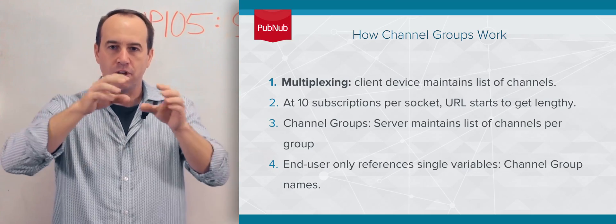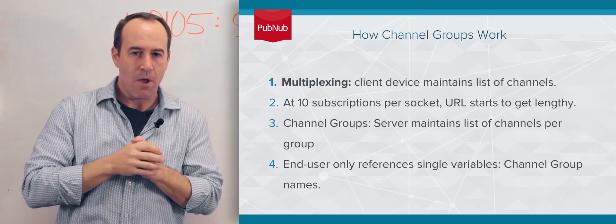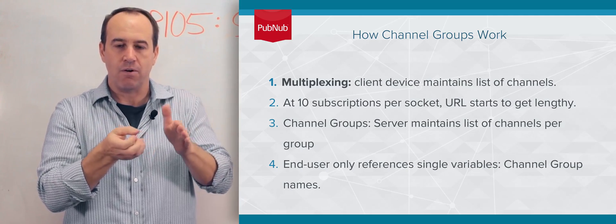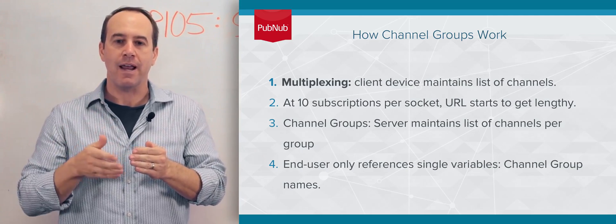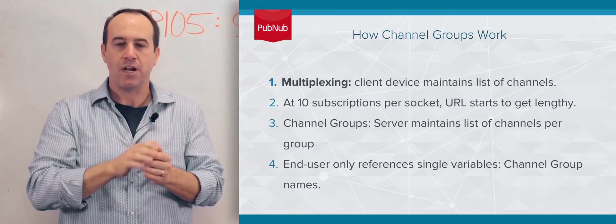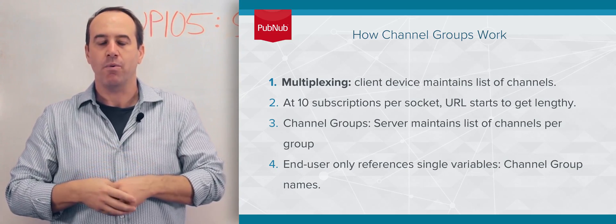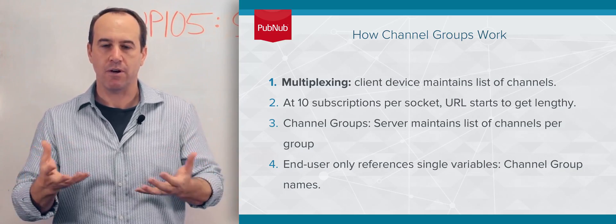And it ends up in the URL, the length of the actual URL. With Channel Groups, you are just subscribing to the Channel Group or up to 10 Channel Groups. And on the server side is a list of those channels per Channel Group. So the server is actually maintaining that list of channels, and that's why we can provide you with more channels per connection.